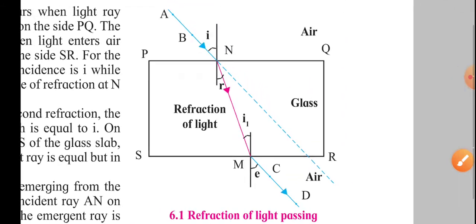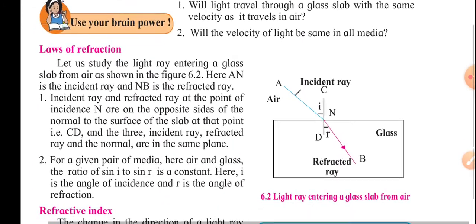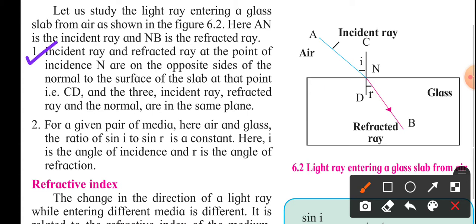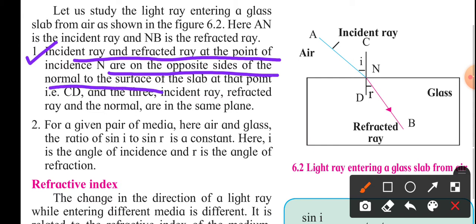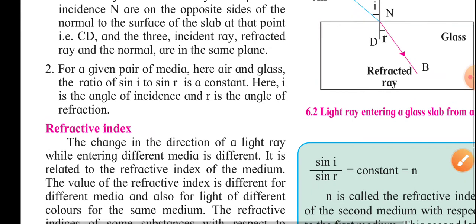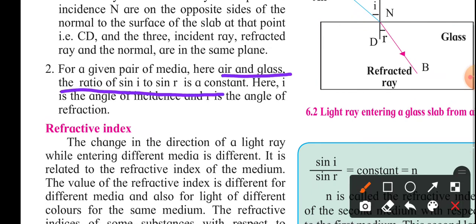Now we look at the two laws of refraction. The first law states: the incident ray and the refracted ray at the point of incidence are on opposite sides of the normal to the surface, and the three — incident ray, refracted ray, and the normal — are in the same plane. The second law states: for a given pair of media, the ratio of sine I to sine R is a constant.